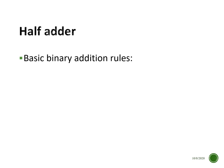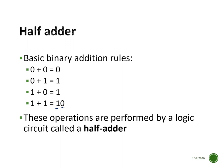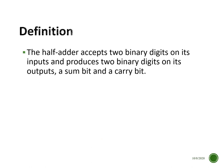A half adder is based on the basic binary addition rules: zero plus zero equals zero; zero plus one equals one; one plus zero equals one; and one plus one equals zero with a carry of one. These operations are performed by a logic circuit called a half adder. In order to do these operations we need a logic circuit, and we can design that circuit using basic gates.